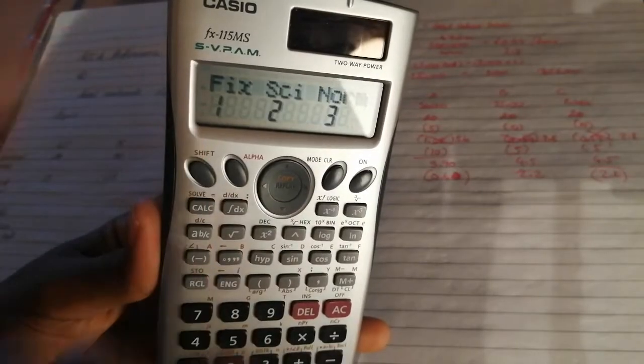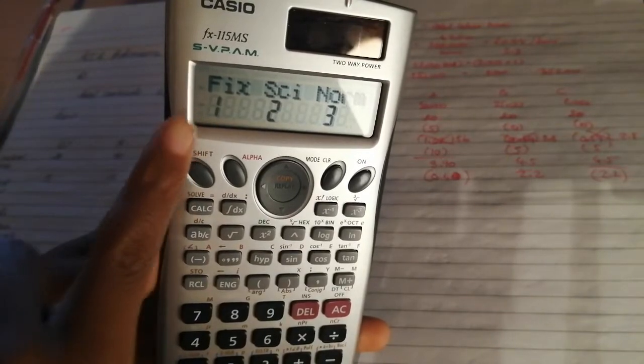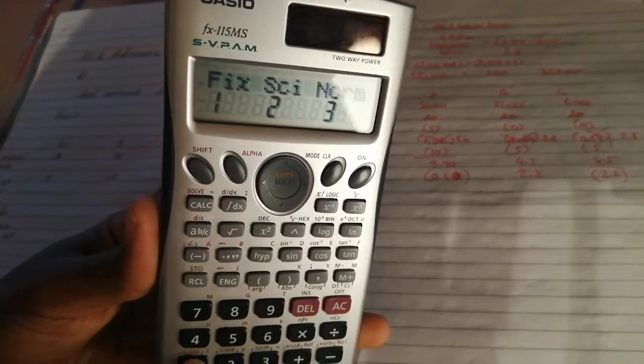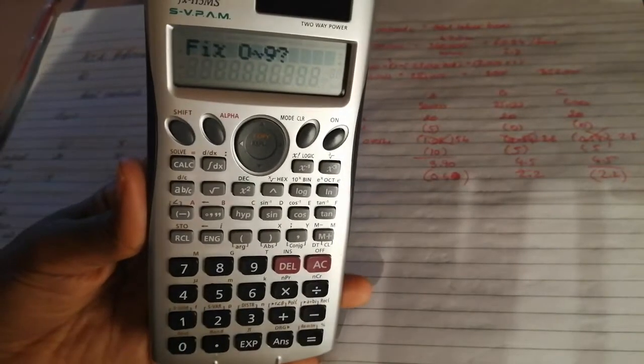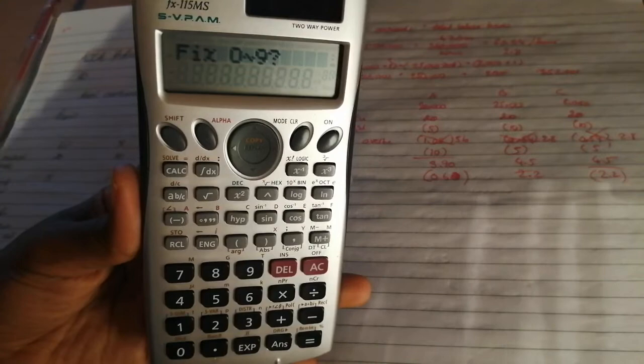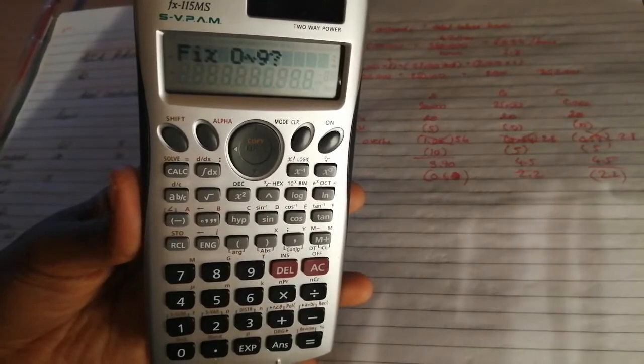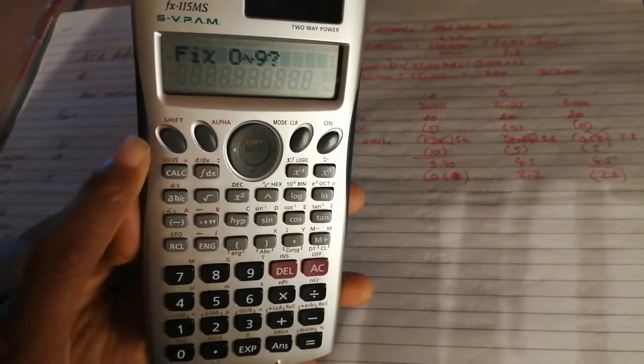Just keep pressing that button until you find fix. Once you do, fix is saying number one, so to get that you have to press the number one down here on your calculator. And now it's saying how many decimal places do you want to fix your answers to? Do you want them to have zero? Do you want them to have nine?